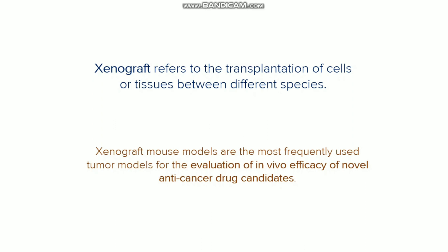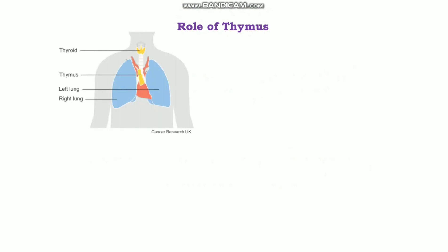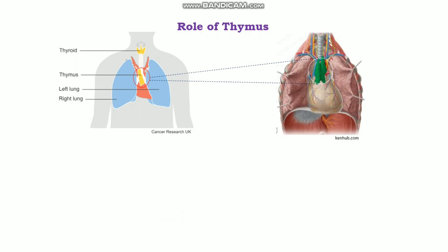To understand this xenograft tumor model, you need to know about the thymus first because it is relevant — so don't skip this part. The thymus is one of the lymphoid organs, and it contains T cells that mature within it.